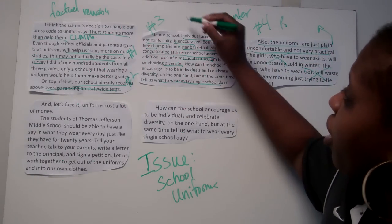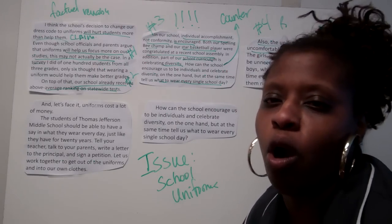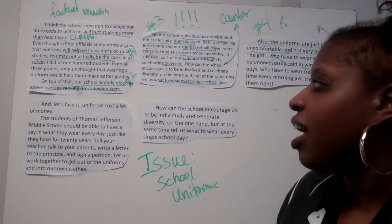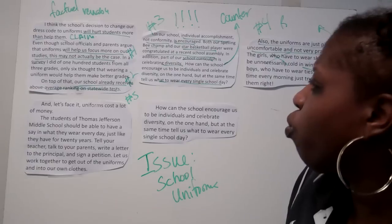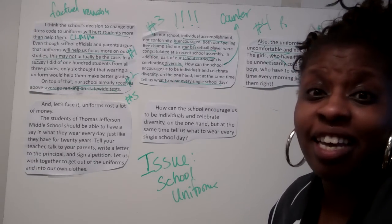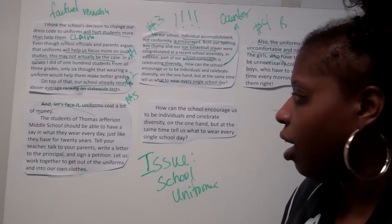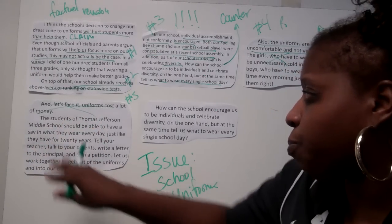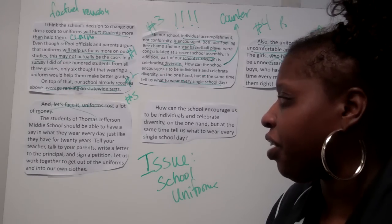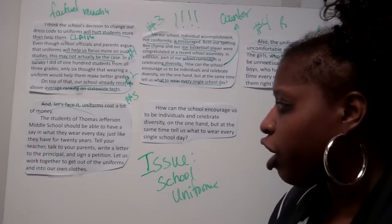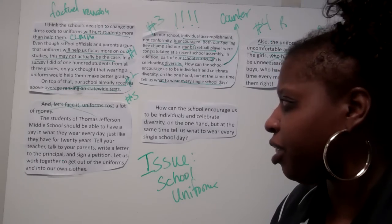So far we have one good piece of reason and evidence that the author has to support her argument. Let's look at the next one: 'And let's face it, uniforms cost a lot of money.' Here we see a reason, but she doesn't give any evidence, so we've got to cross this one out. Then: 'The students of Thomas Jefferson Middle School should be able to have a say in what they wear every day, just like they have for 20 years. Tell your teacher, talk to your parents, write a letter to the principal, and sign a petition.'